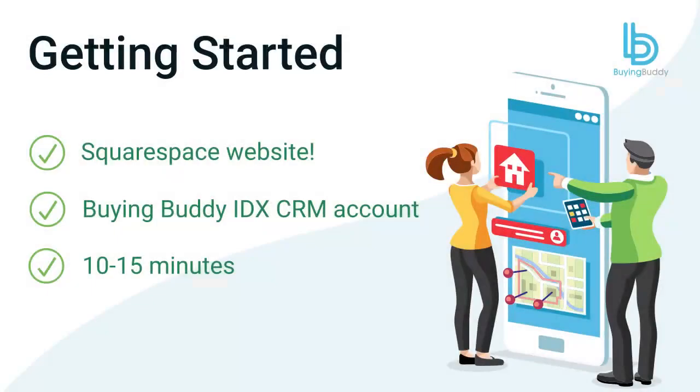You'll need a Squarespace business plan so that you can add the widget components, a BuyingBuddy account, and about 10 to 15 minutes of your time.